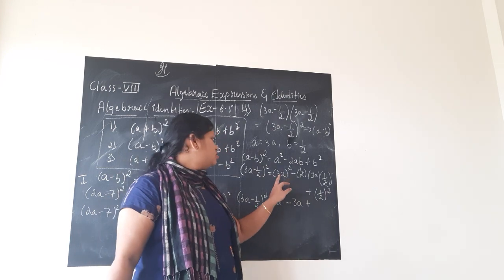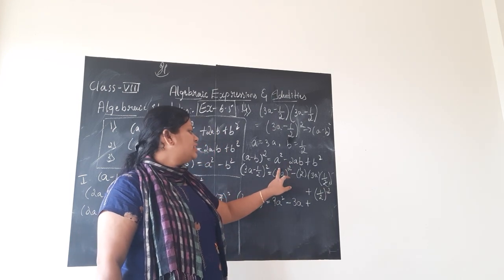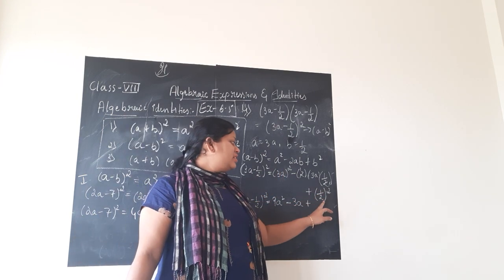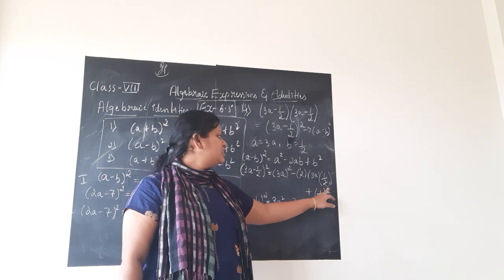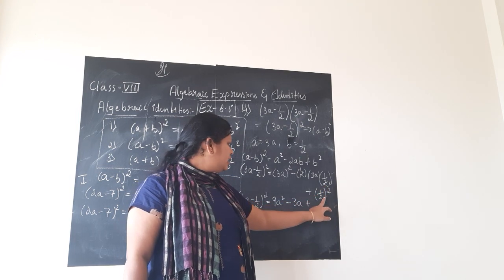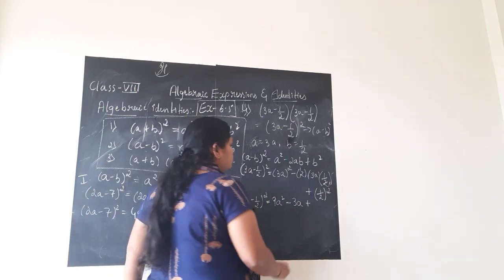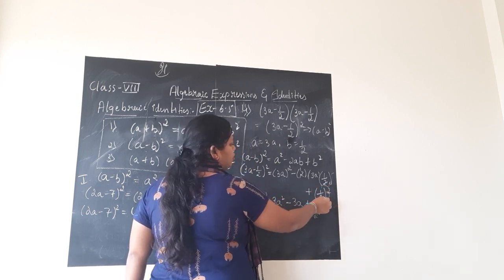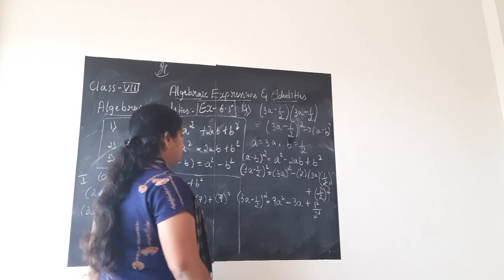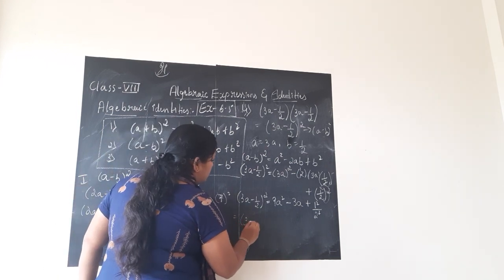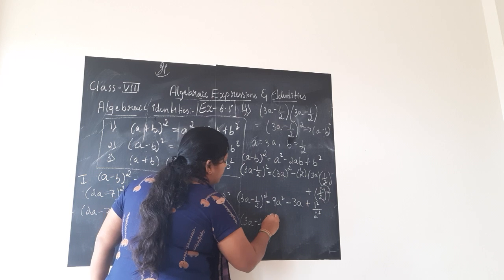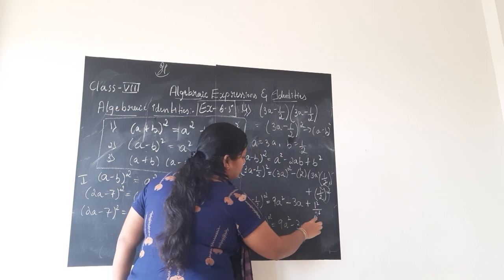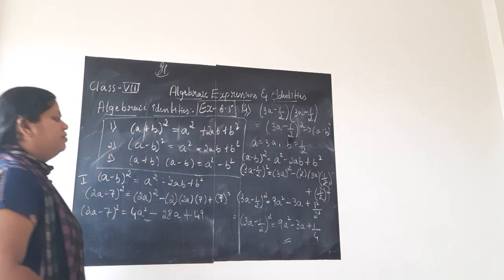Plus 1 by 2 whole square. See: 3a whole square means the square is applied separately to 3 and to a, giving 9a squared. Similarly for fractions: 1 by 2 whole square means the power 2 is applied to both numerator and denominator — that is 1 squared divided by 2 squared. So one more step: 3a minus 1 by 2 whole square equals 9a squared minus 3a plus 1 by 4.